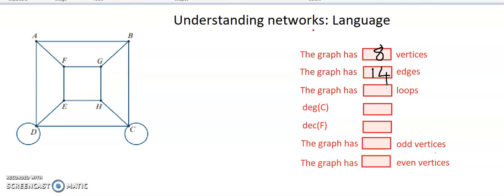Loops is a pathway that starts at the vertices and goes back around to the same vertices without going to another vertices. I've got 1, 2 loops.